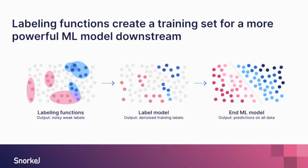Here are the steps again: we create labeling functions to generate a training set for a more powerful ML model. The labeling functions provide noisy, weak labels. We use the label model to denoise the labels and determine the final programmatic label. We then use this programmatically labeled data to train an ML model, which can be deployed to get predictions on all the data — whether online streaming or batch offline data.